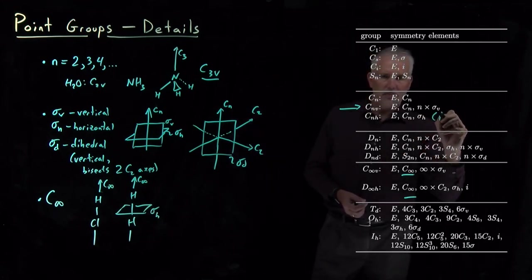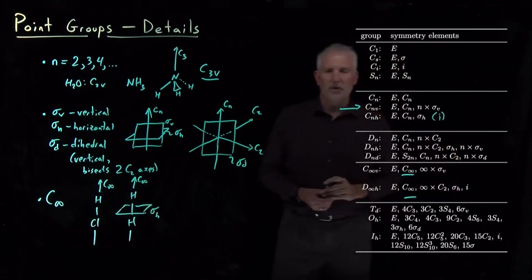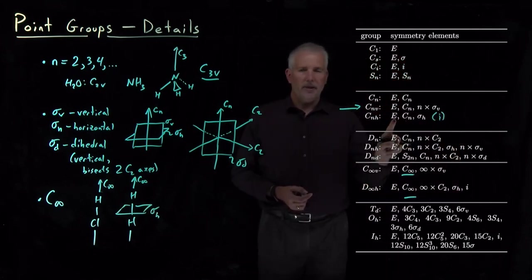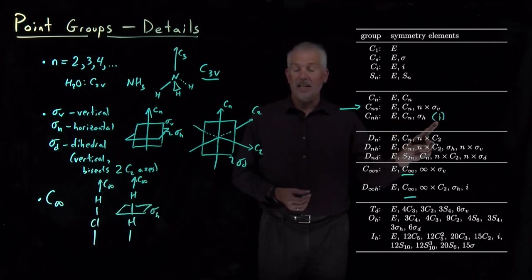Sometimes in addition has an inversion operation. So it might have identity, a C2, a sigma H, and an I.